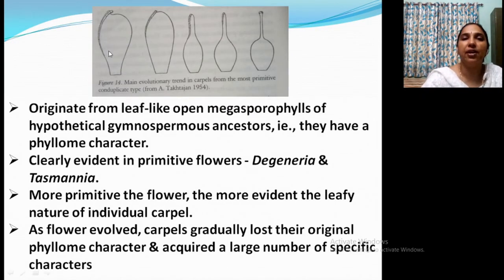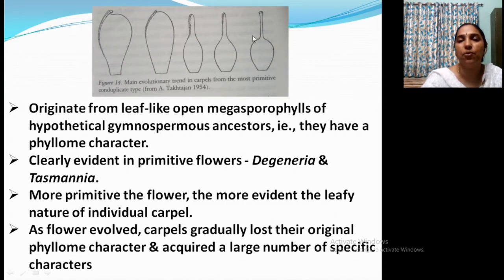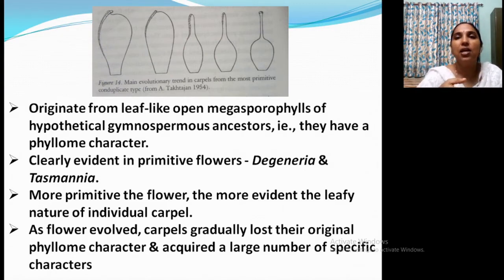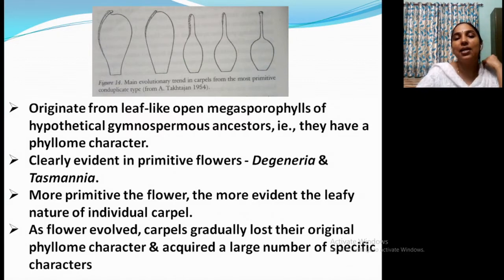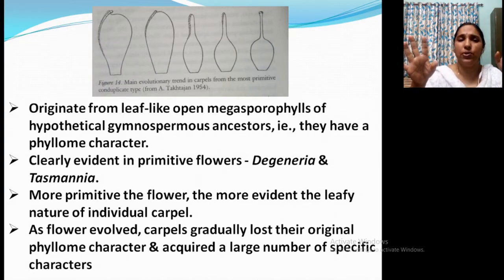You can see a picture here showing the evolutionary trend in carpel from primitive to advanced, according to Takhtajan. The primitive form is the broad laminar type. Then how this lamina becomes narrowed, forming the stylar portion and stigma, with the basal portion modified into ovary. Usually primitive forms are leaf-like. In the case of stamen also, the leaf-like megasporophylls of gymnosperms are considered as ancestors — that is the phyllome character. Phil means leaf. This type can be observed in primitive flowers like Degeneria and Tasmania.